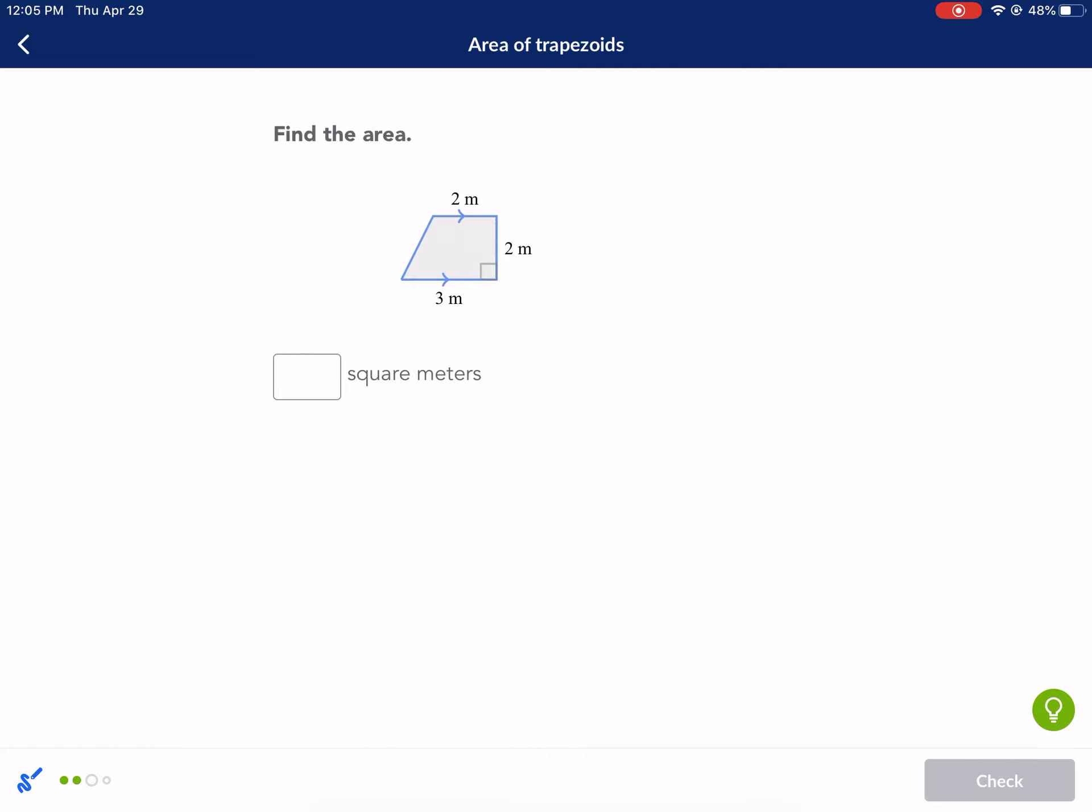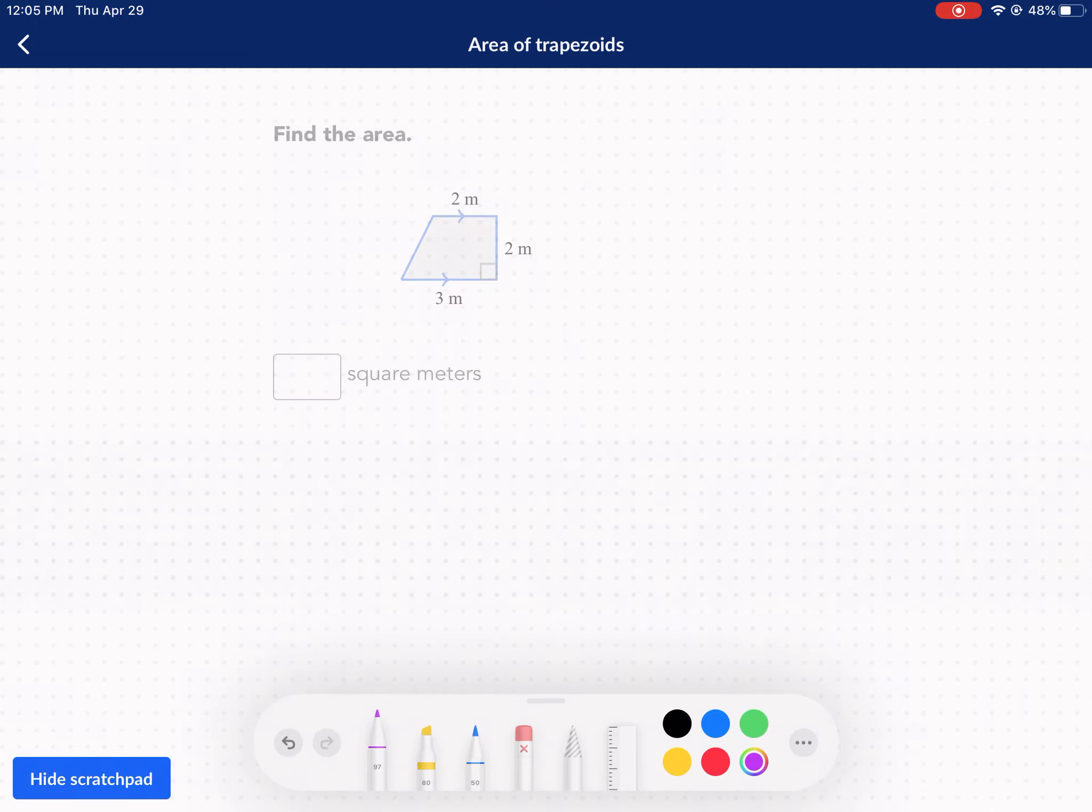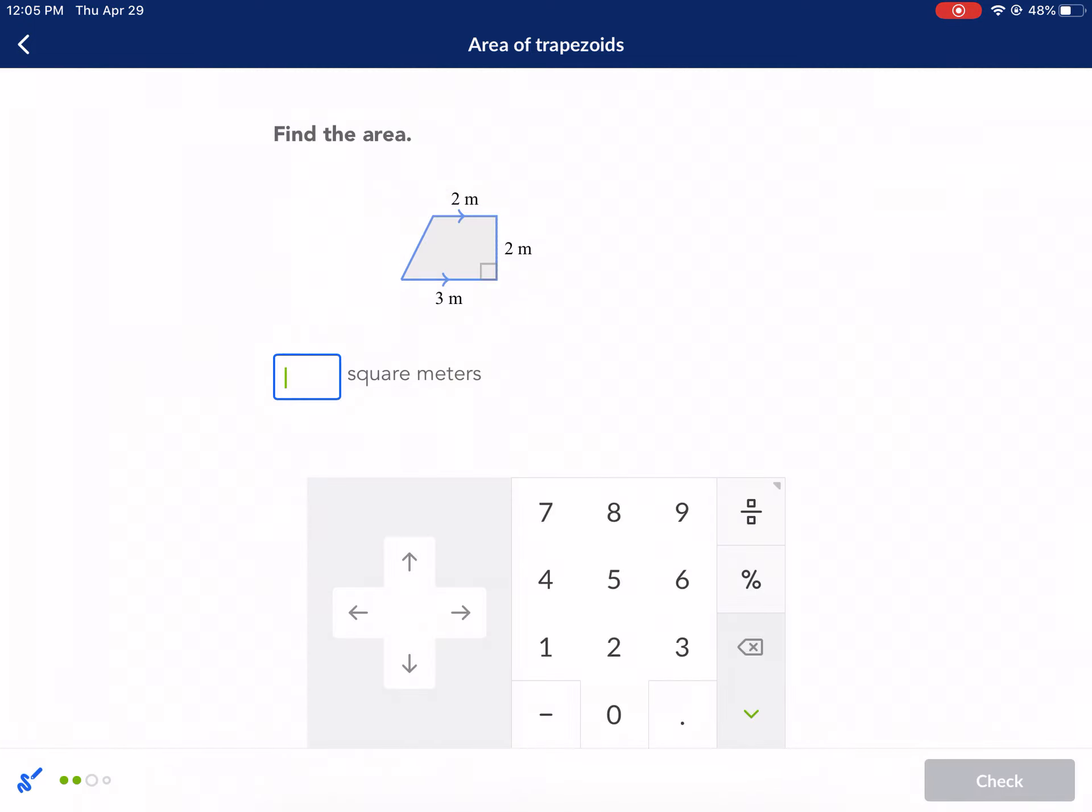All right, this one again we have, we're going to add these two together. We're going to have five and we multiply that by two and then multiply that by one half. That's the height. Those are the bases added together. And this is the one half part. So we get 10 times one half, which is just five. So five square meters.